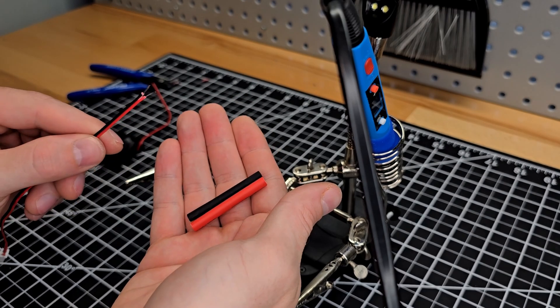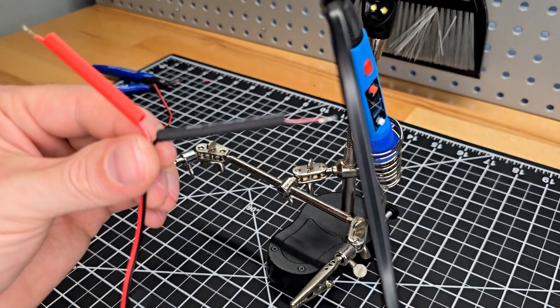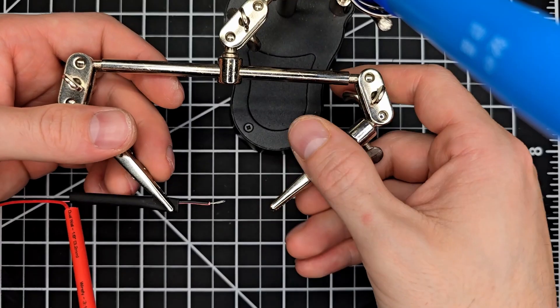Because we're going to be putting solder on these wires I want to be able to protect them so prior to soldering them together I will put heat shrink on one side.